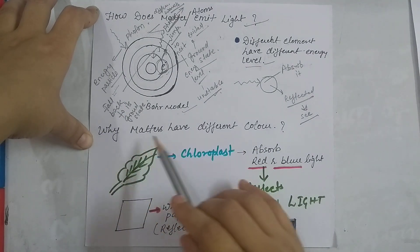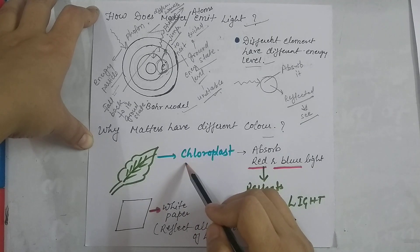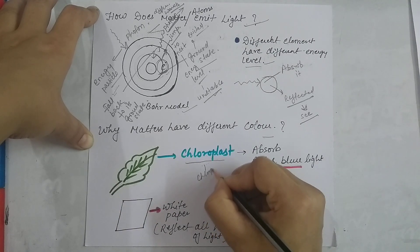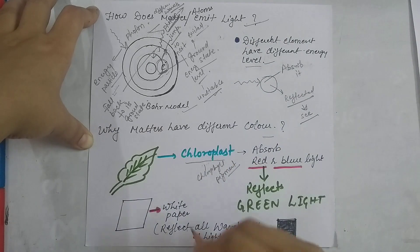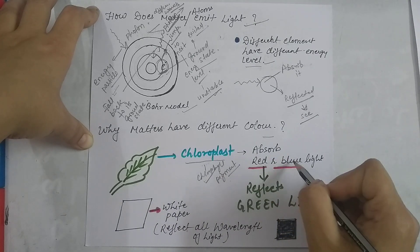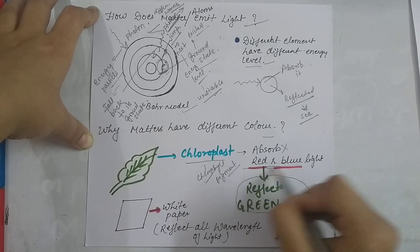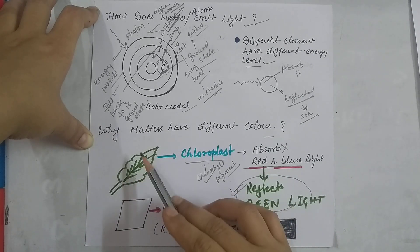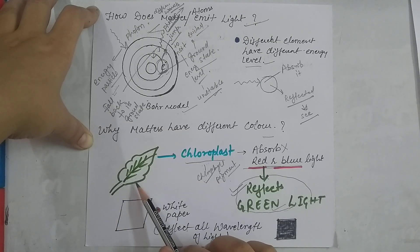The next question is: why do objects have different colors? You can see that leaves have a green color. We already know that leaves have chloroplasts, and due to this chlorophyll pigment, the leaves appear green. The chlorophyll pigment absorbs red and blue light. Whatever light they reflect — they reflect green light — is what we see. We are able to see only the light that gets reflected.